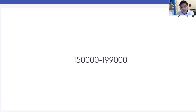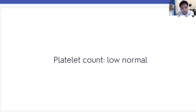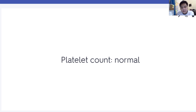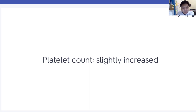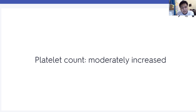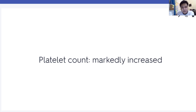Platelet count 150,000 to 199,000 — low normal. 200,000 to 400,000 — normal. 401,000 to 599,000 — slightly increased. 600,000 to 800,000 — moderately increased. Greater than 800,000 — markedly increased. Please review the corresponding descriptions for estimated platelet count.